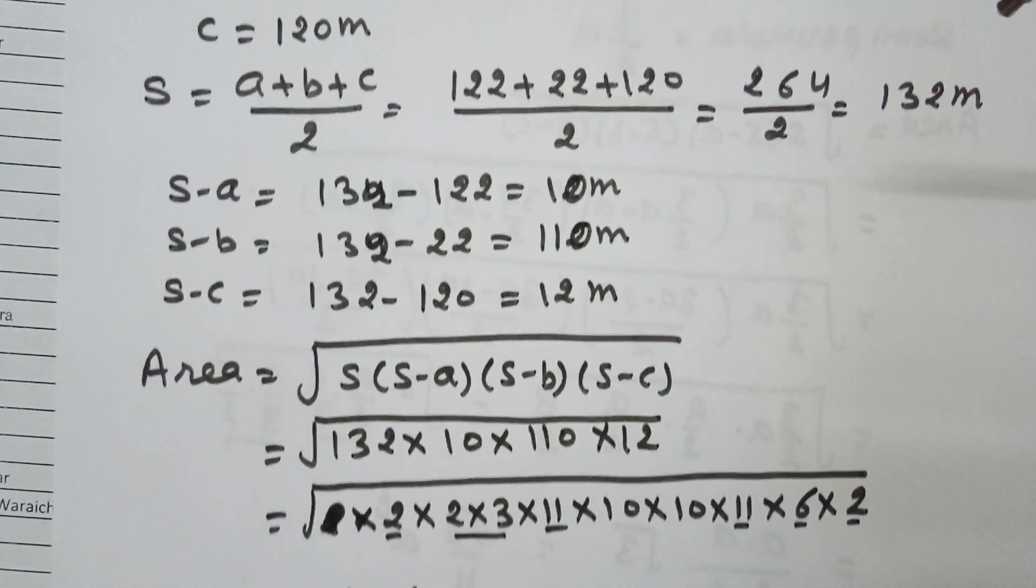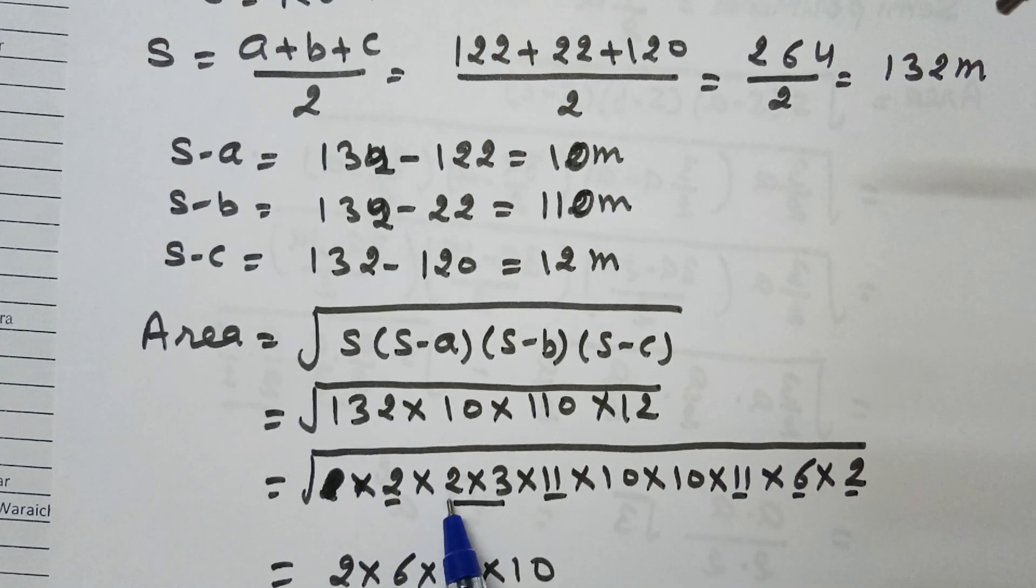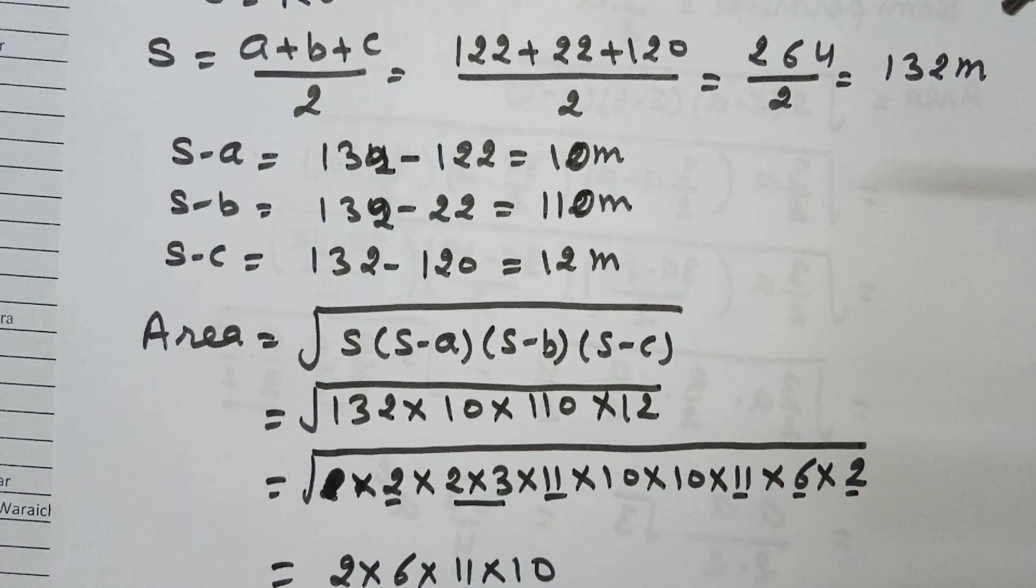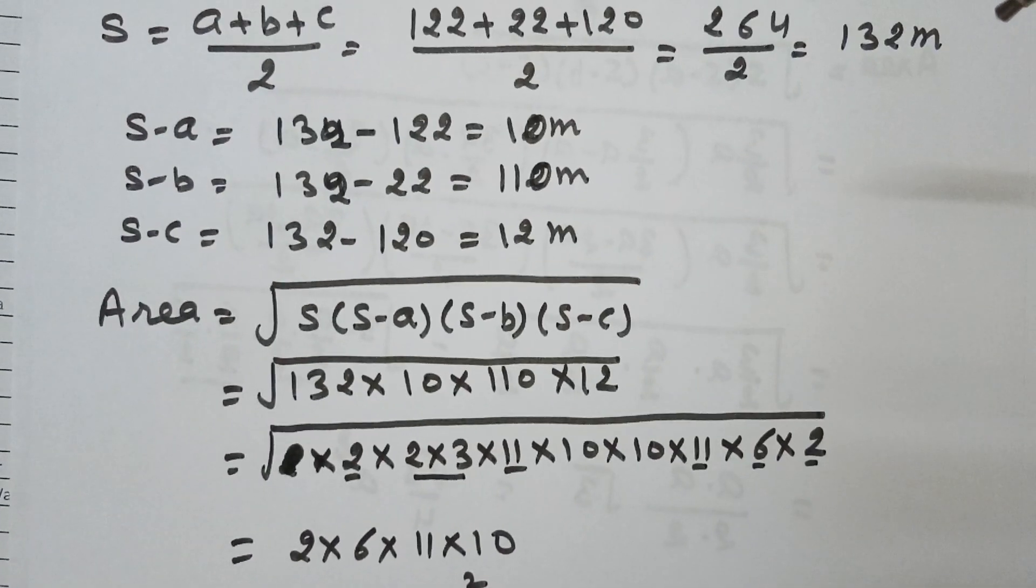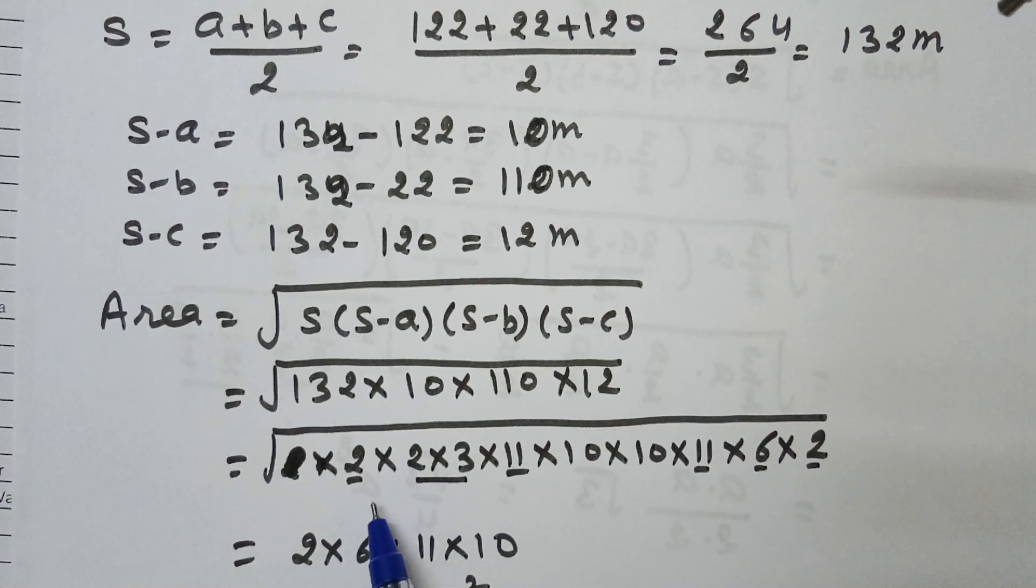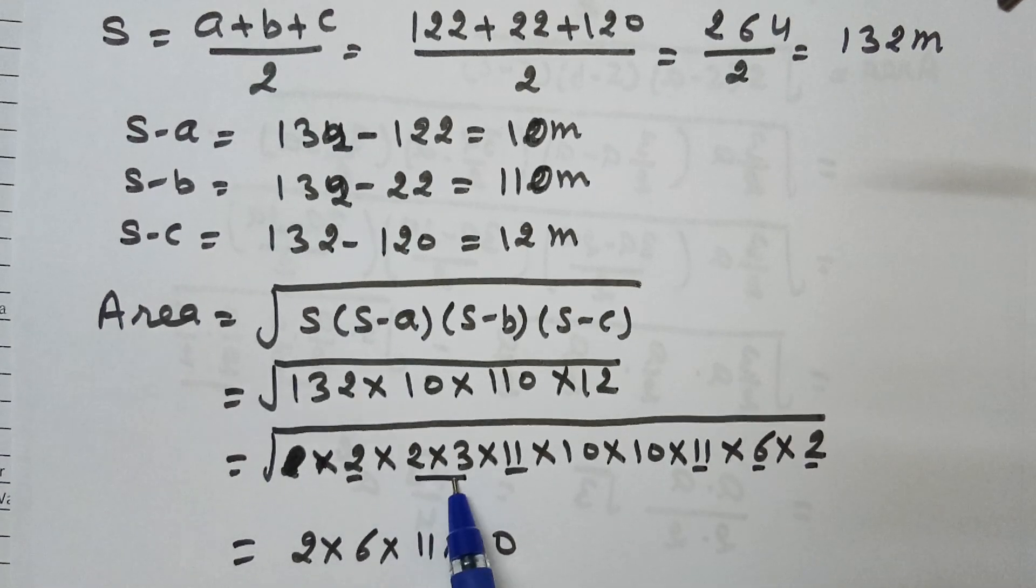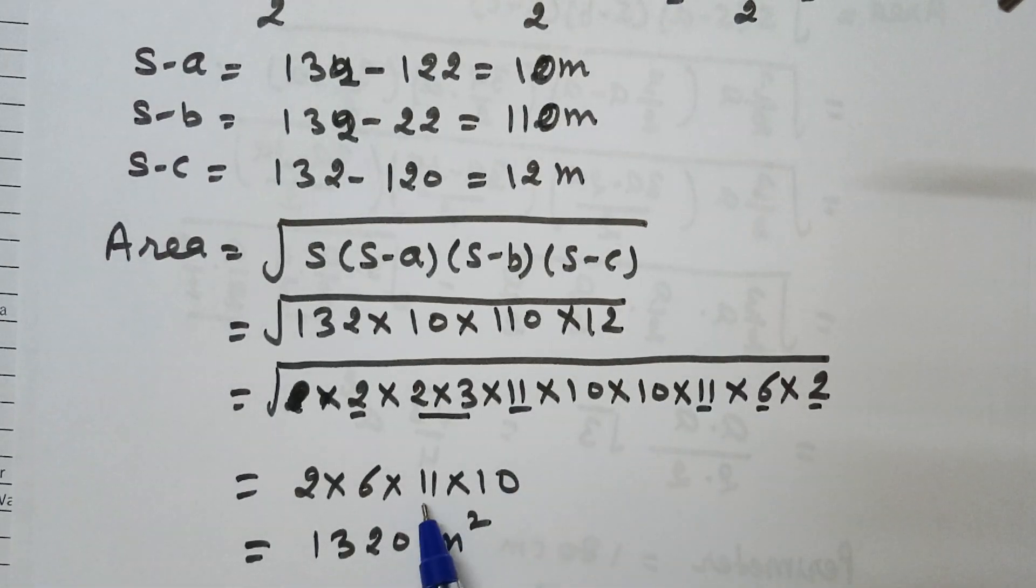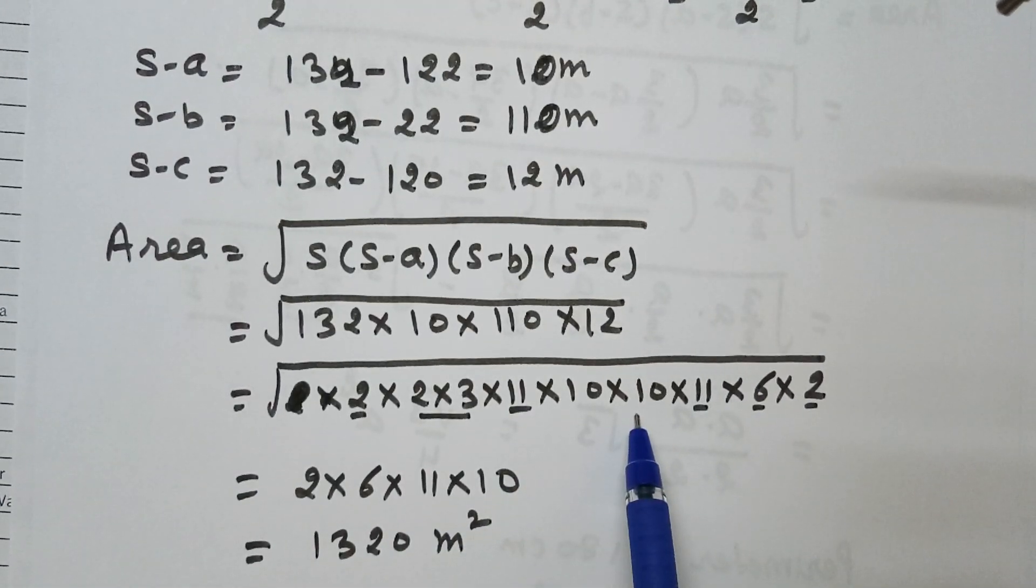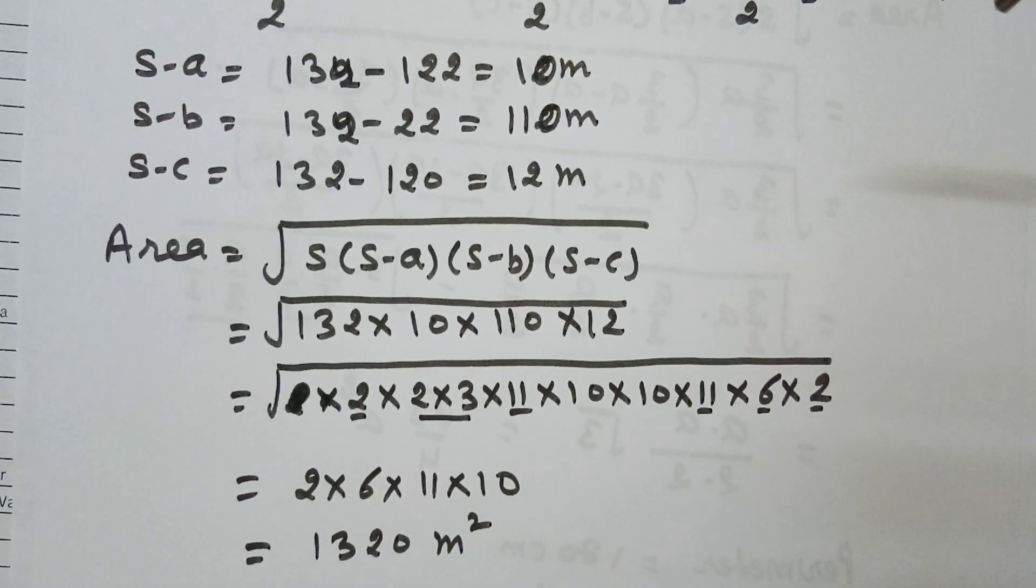We do prime factorization: 132 = 2 × 2 × 3 × 11, 10 remains as is, 110 = 10 × 11, and 12 = 6 × 2. Since these numbers are under a square root, we find pairs. Two 2s pair to give 2 outside, 3 pairs with the 6 (which is 2×3) to give 6 outside, two 11s pair to give 11 outside, and two 10s pair to give 10 outside. The product is 2 × 6 × 11 × 10 = 1,320 square meters.